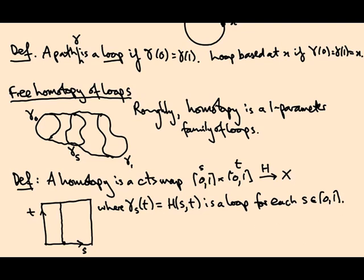Now it turns out this notion of homotopy while it's very useful is not going to be the one that gives us a fundamental group. We're going to need a slightly more restrictive notion of homotopy called based homotopy, and this is to do with the base point of the loop where it starts and ends.